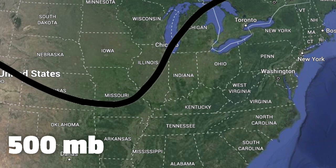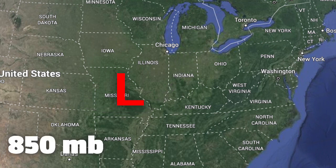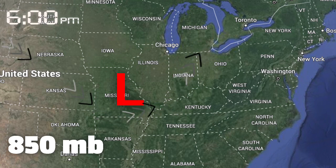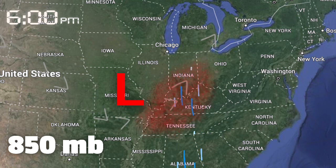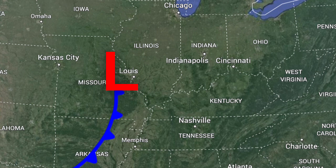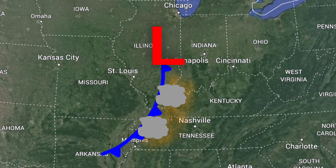Meanwhile, as the trough moved into the country at 500 millibars — about 18,000 feet — this caused a low-pressure system located at 850 millibars, about 5,000 feet, which was present over Missouri at 6 p.m. on the 5th. Because of the low-pressure system, the low-level jet wind flow followed suit. But since there were already southerly winds near the surface, this resulted in wind shear along the low-pressure system. As the cold front associated with the low-pressure system moved through, it clashed with the warm, unstable air, thus creating thunderstorms along the cold front. And thanks to the wind shear, these thunderstorms could become tornadic, as long as the ingredients were strong enough.